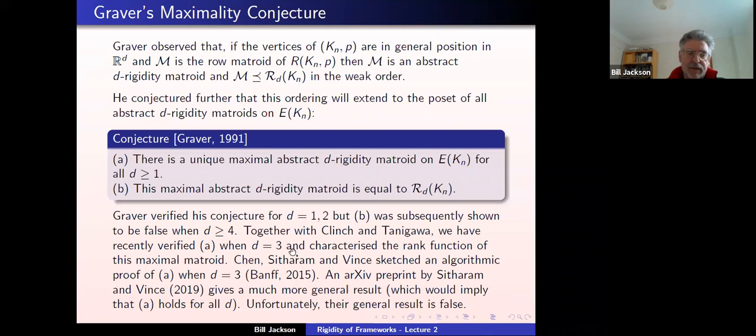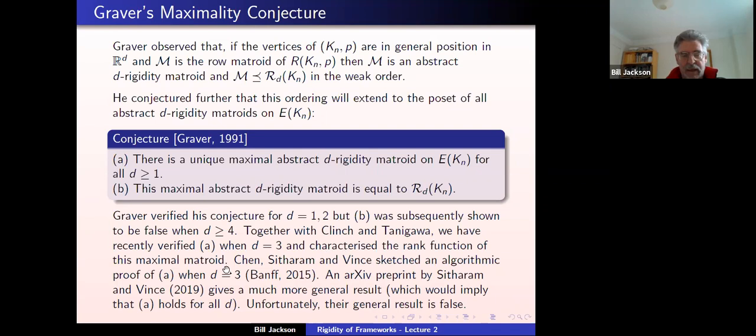The way we show it's maximal is we guess what the maximal abstract rigidity matroid is — actually Walter Whiteley guessed it. We show that Walter Whiteley's guess is true for d equals three, and then use the fact that it's maximal to work out what its rank function is. But our proof wouldn't work without knowing, or at least suspecting, what the maximal matroid is.